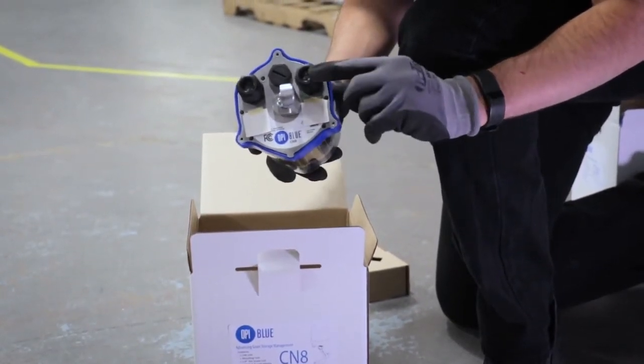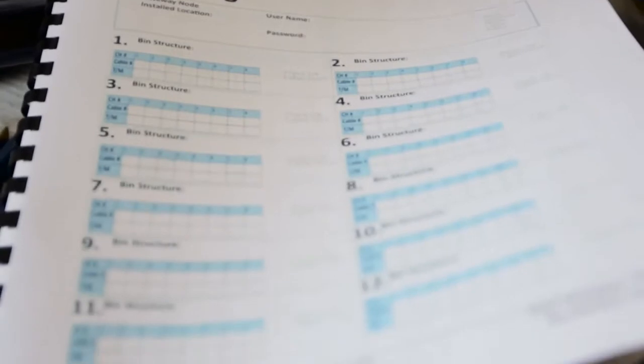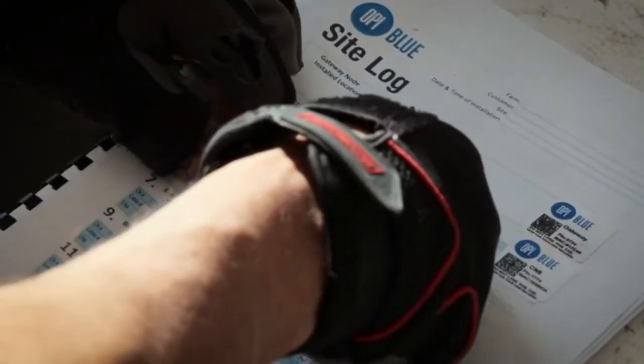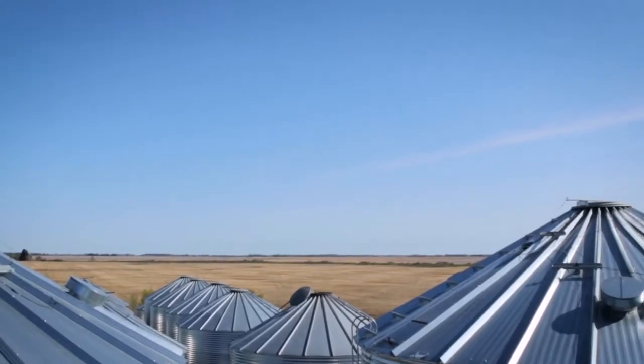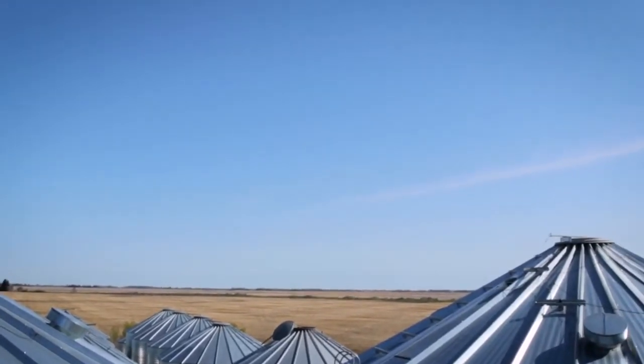You'll need to remove these stickers from the units and attach them to the site log contained on the last page in the user guide and install manual. This is used as the primary reference to identify which nodes are installed on which bins.